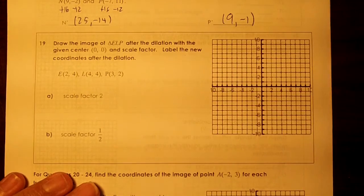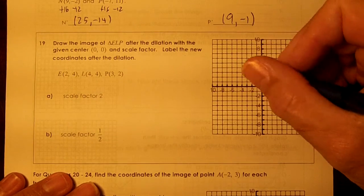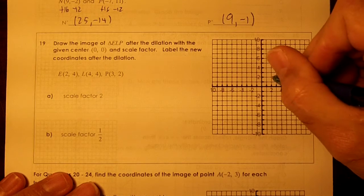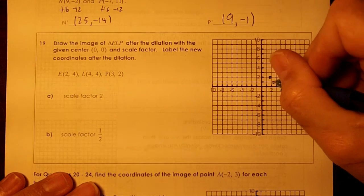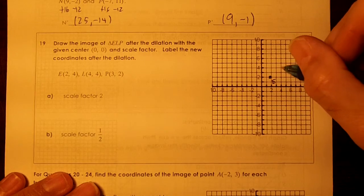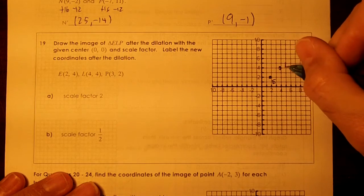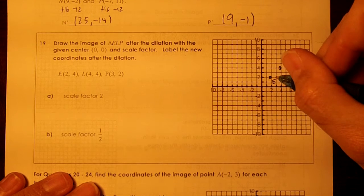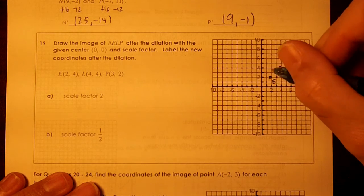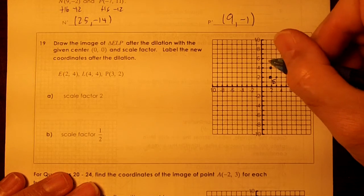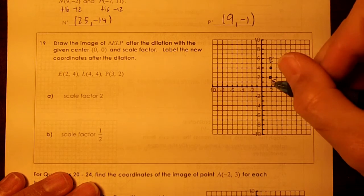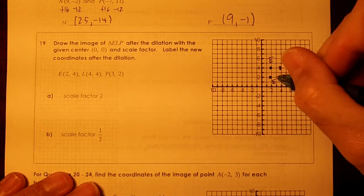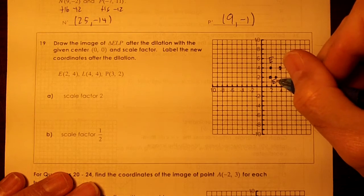So we're going to graph these points. We'll graph 2,2, that's going to be E. We'll graph 4,4, that's going to be L. And then 3,2. 2,4 is up here, that's going to be E. 4,4 and 3,2 is right here, and that's going to be P.